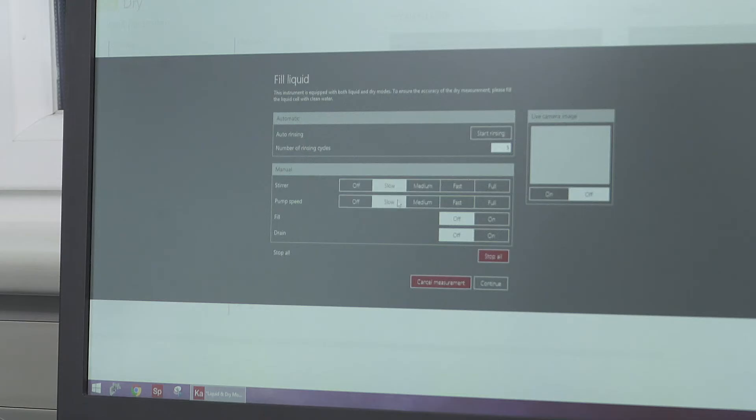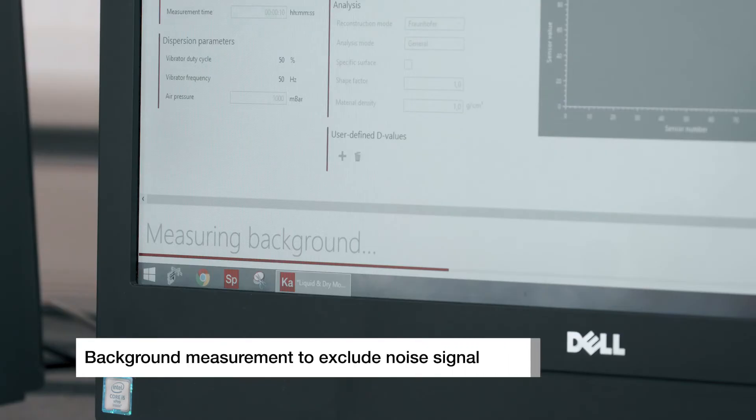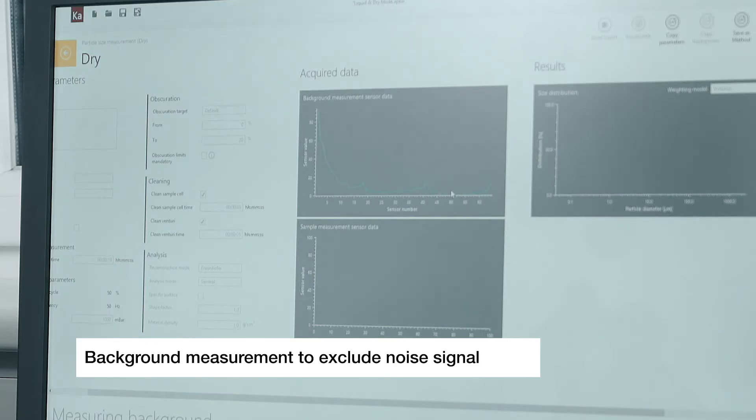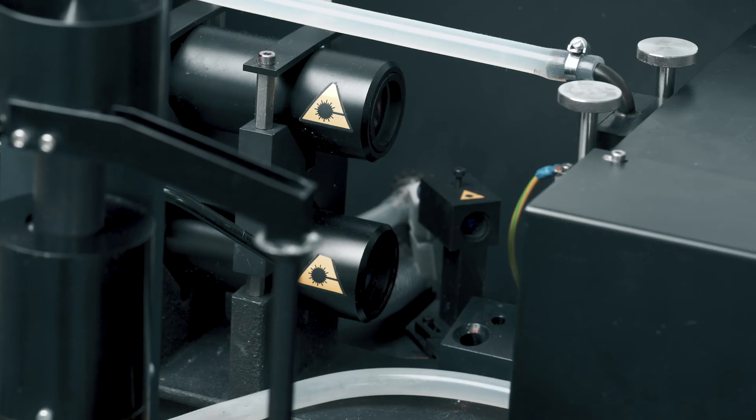Before the sample measurement is started, the background is recorded in order to exclude the noise signal. There is no realignment of the laser needed or warm-up time, as PSA uses robust and permanently aligned solid-state lasers.